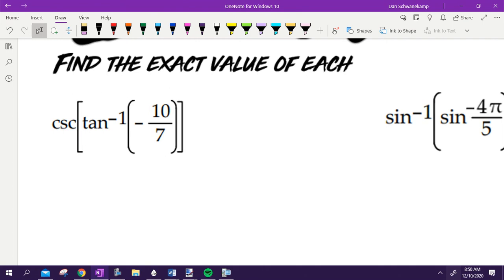Let's find the exact value of each. Cosecant of inverse tangent of negative 10 over 7. Okay, it looks a little bit weird, but just remember what you're doing. Inverse tangent means where is tangent going to be negative 10 sevenths? Show me with your fingers, which quadrant are you going to be in if tangent is negative? Quadrant 4, because inverse tangent lives in 1 or 4.